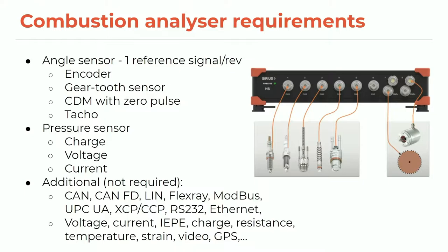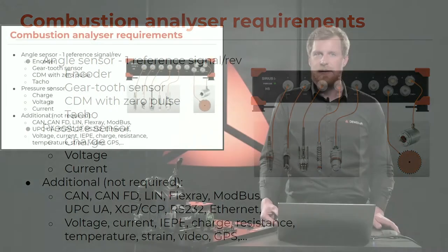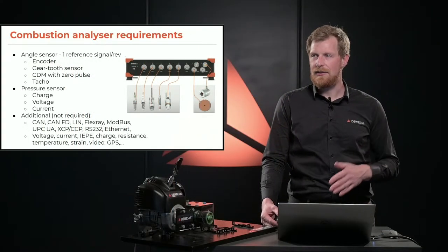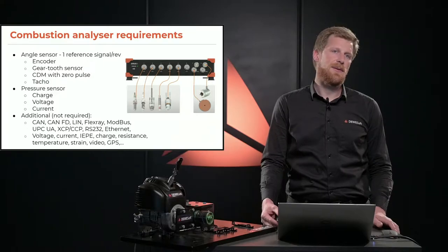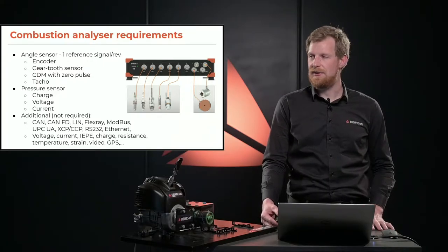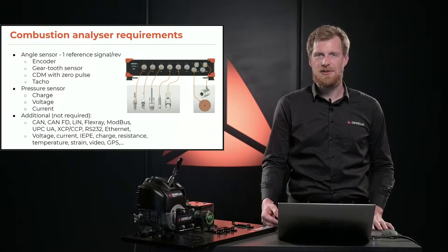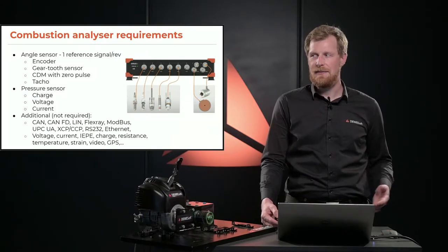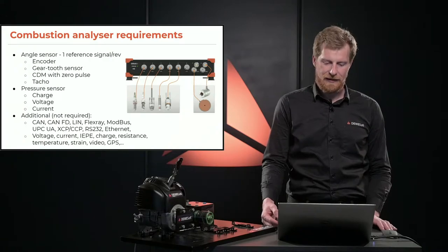For pressure sensors, we support direct charge inputs, voltage sensors, or current sensors. We have our own charge amplifiers in standard series, high-density standard series, or high-speed series slices. Additionally, you can connect CAN, CANFD, LIN, FlexRay, and Modbus — any kind of vehicle bus directly. You can also measure voltage, current, connect video, and GPS for mobile measurements. We are really not limited in how many channels can be connected together.